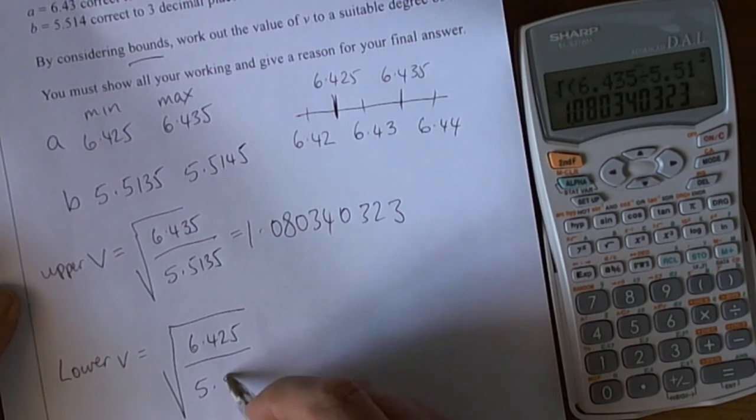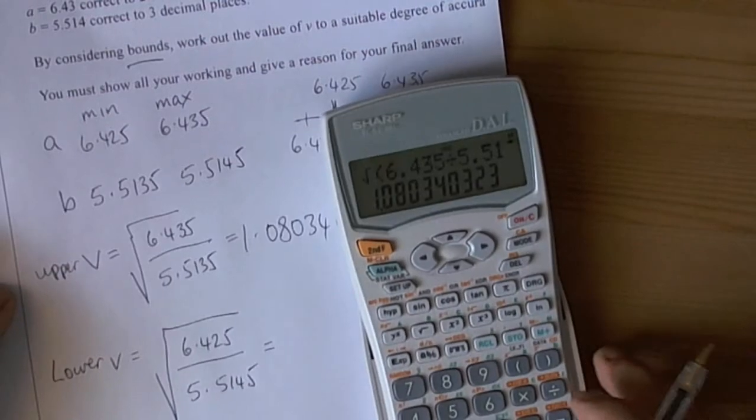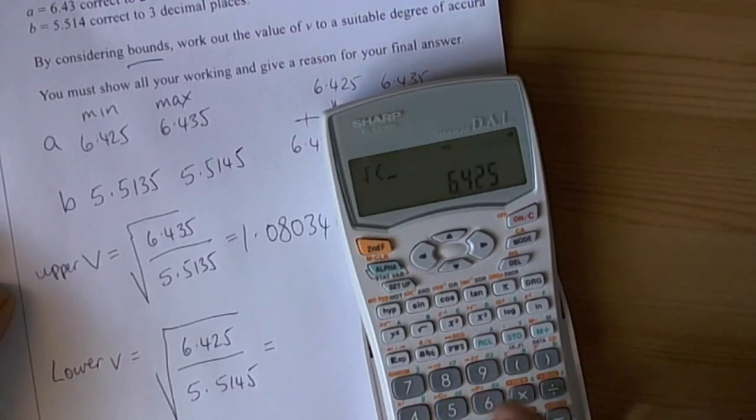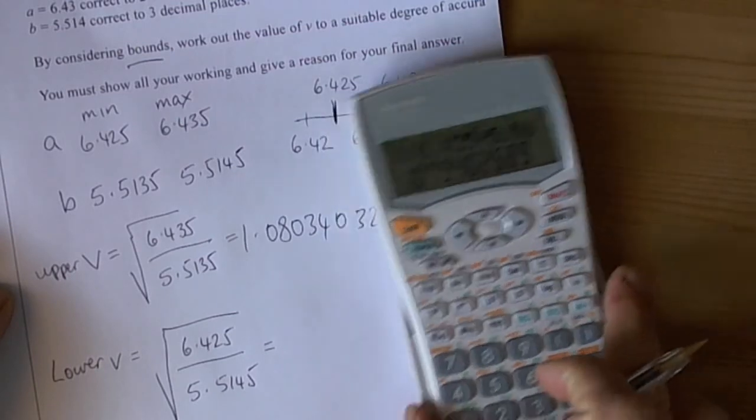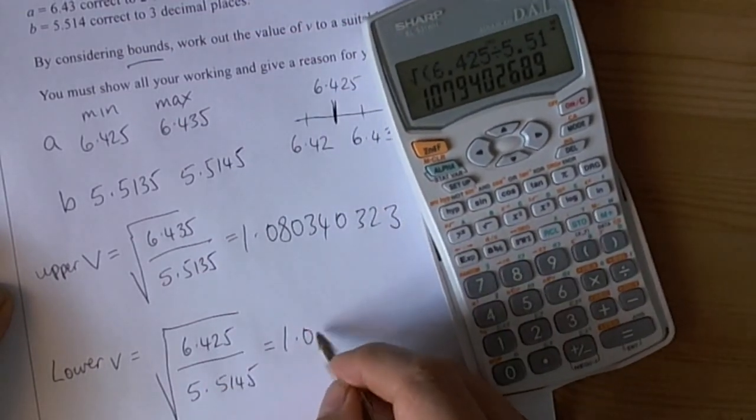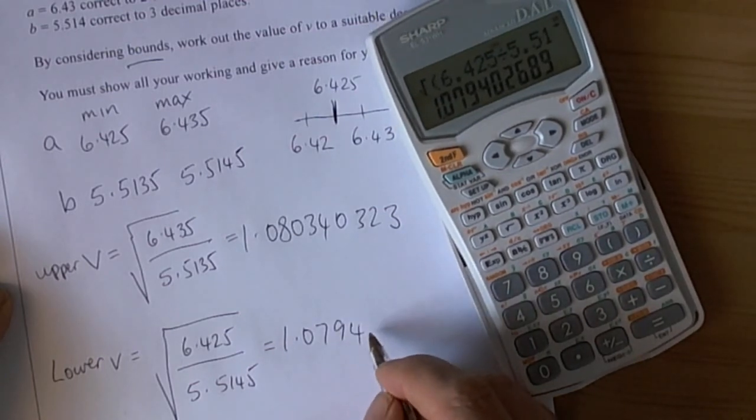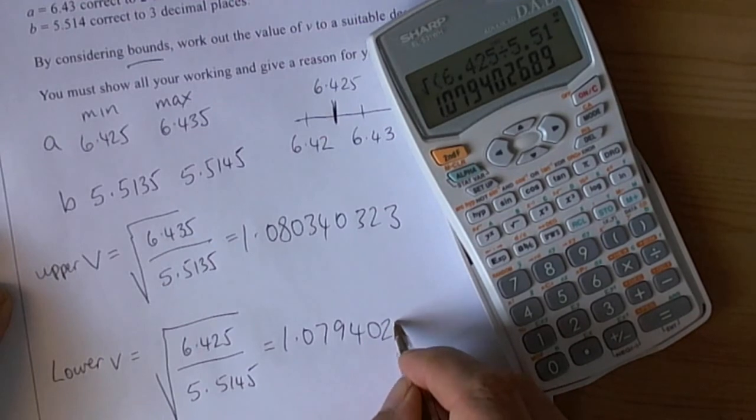So 5.5145. So again, on our calculator we're going to do square root, open a bracket, 6.425 divide by 5.5145 close the bracket equals, and again we must write down the whole of this number so that we can actually then decide what the final answer is going to be. So 1.079402649.